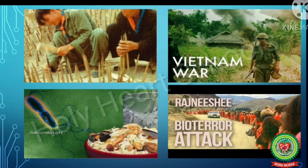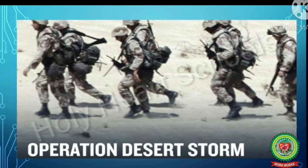In 1984, 751 people were intentionally infected with Salmonella bacteria, an agent that causes food poisoning, when they ate contaminated food at restaurant salad bars in Oregon, USA, during the Rajneeshee bioterror attack.